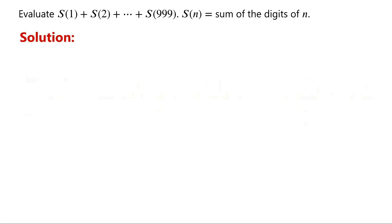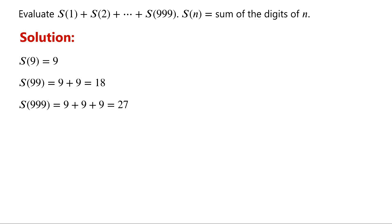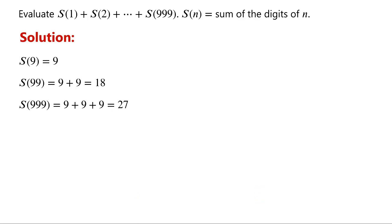For example, s(9) is equal to 9. s(99) is equal to 9 plus 9, which is equal to 18. s(999) is equal to 9 plus 9 plus 9, which is equal to 27. By the definition of s(n), we know that s(099) is equal to 0 plus 9 plus 9, which is 18, equal to s(99). Similarly, s(009) is equal to 0 plus 0 plus 9, which is 9, equal to s(9).